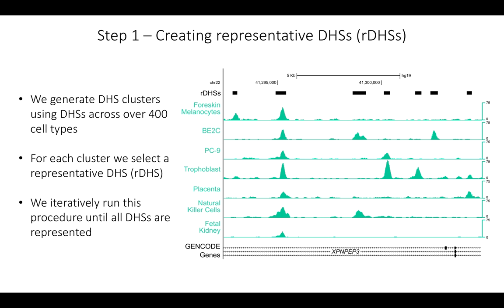Here is a brief overview of how we created the registry of CREs. We based everything on what we're calling representative DNase Hypersensitivity Sites. Here in green are signal tracks from DNase-seq experiments. DNase-seq assays open regions of chromatin, and presumably these regions are open due to transcription factor binding. These regions may have putative regulatory function because of these TFs binding, interacting with one another, and interacting with transcriptional machinery.